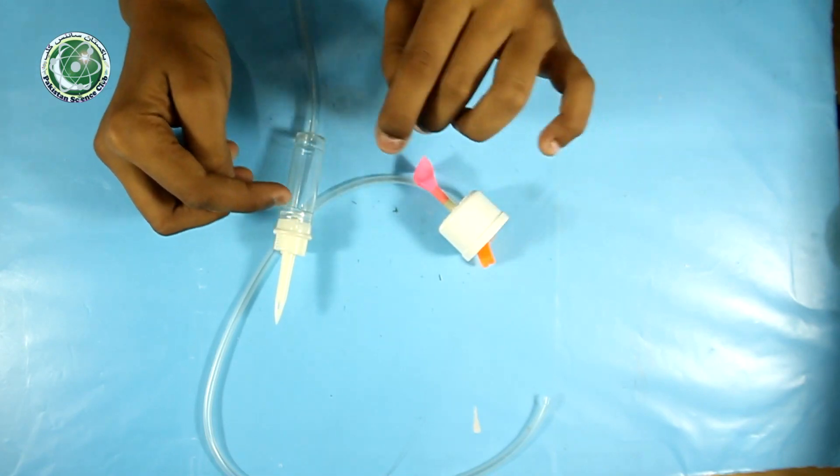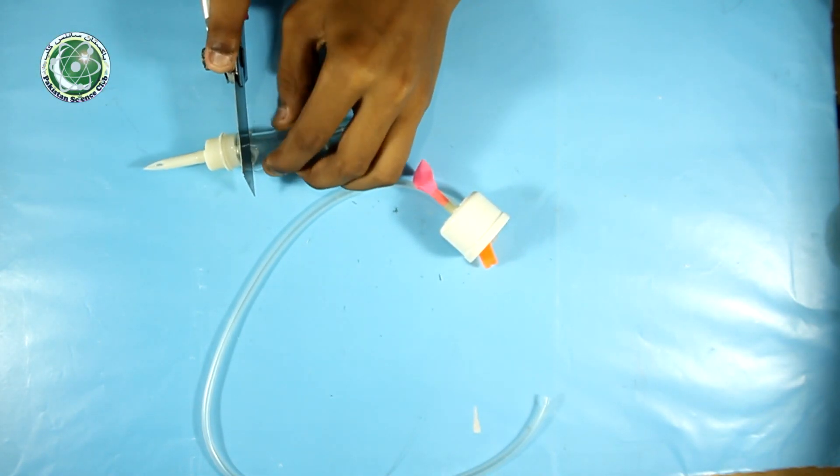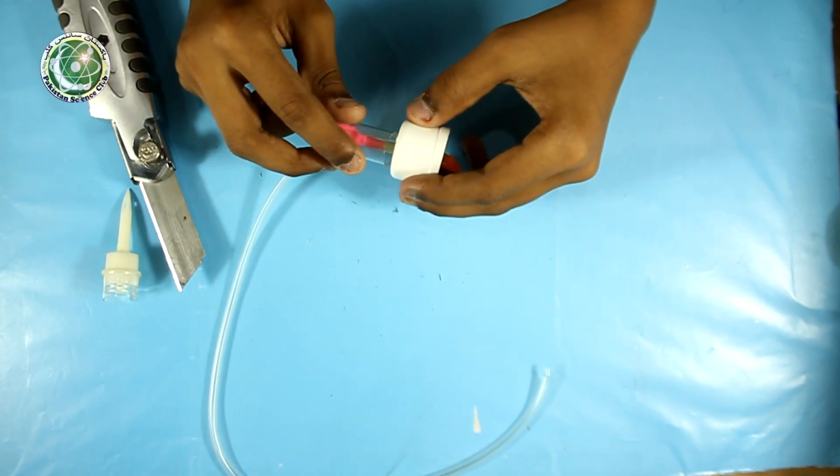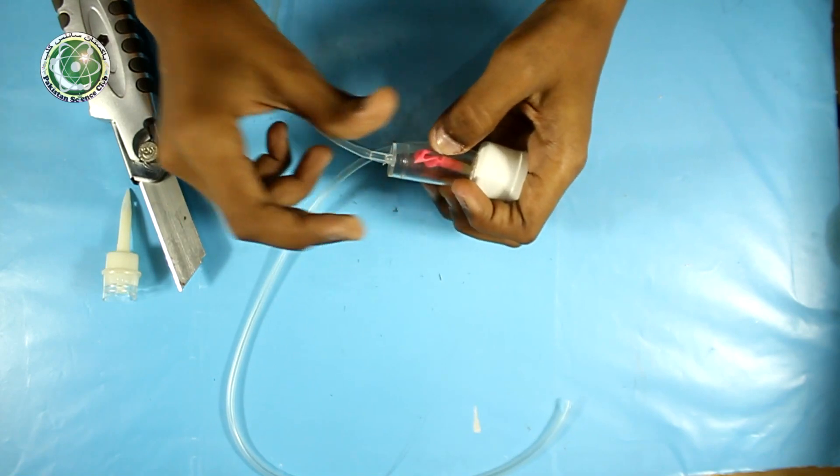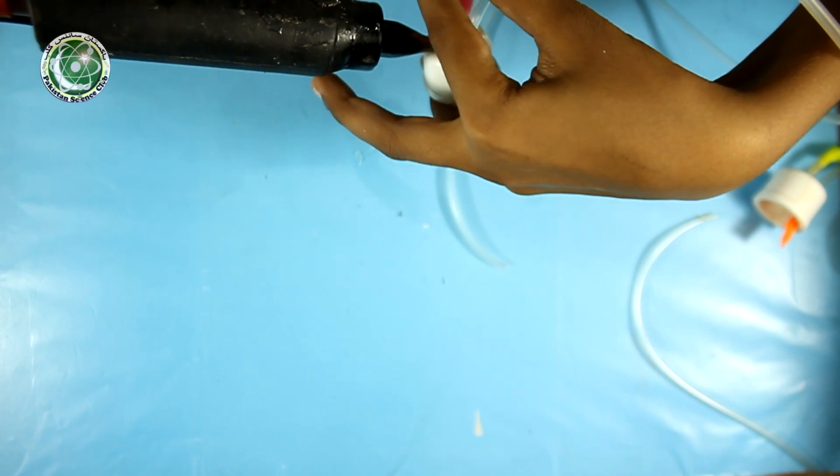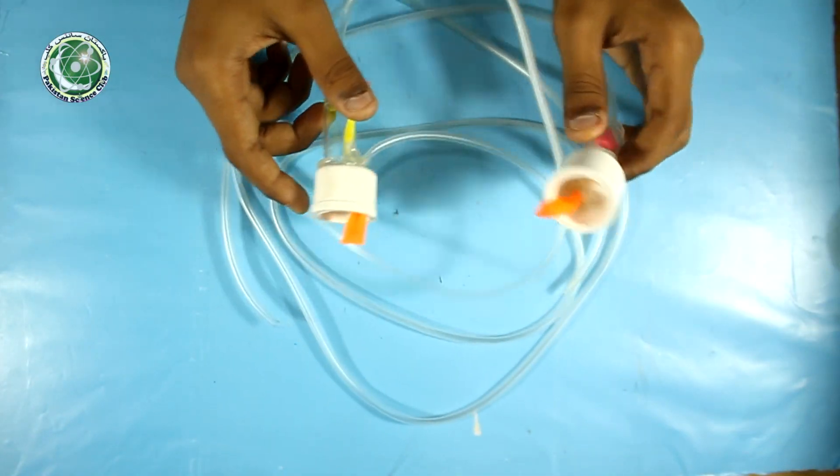Now I will take the drip chamber and cut it, and then we will paste it on the PVC cap with the help of glue gun. Our two holes are ready.